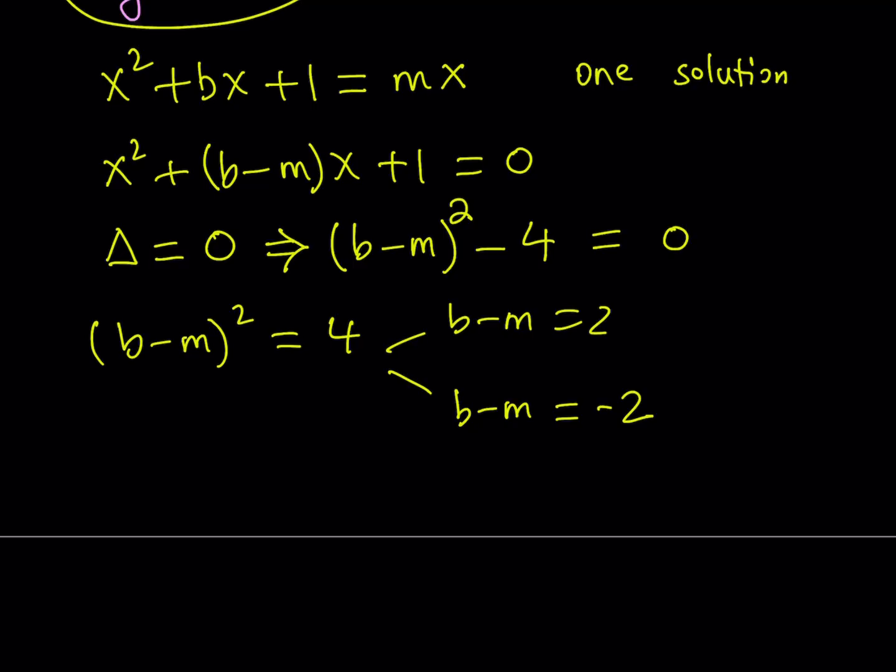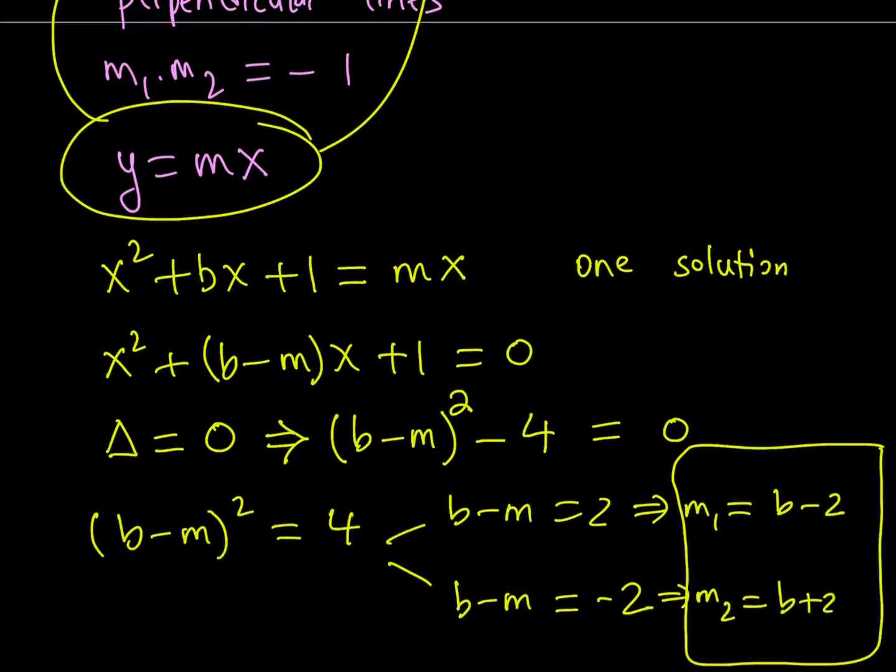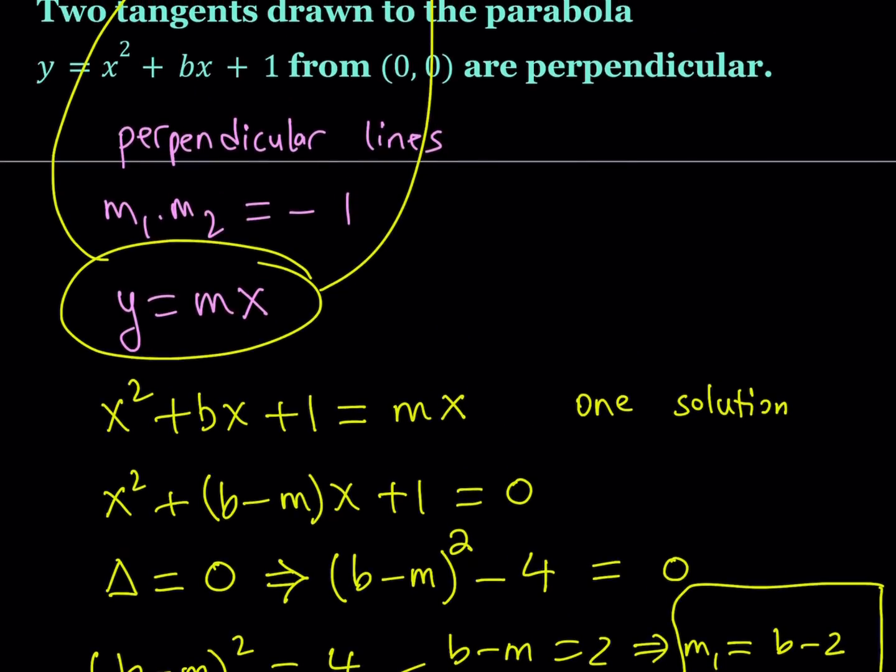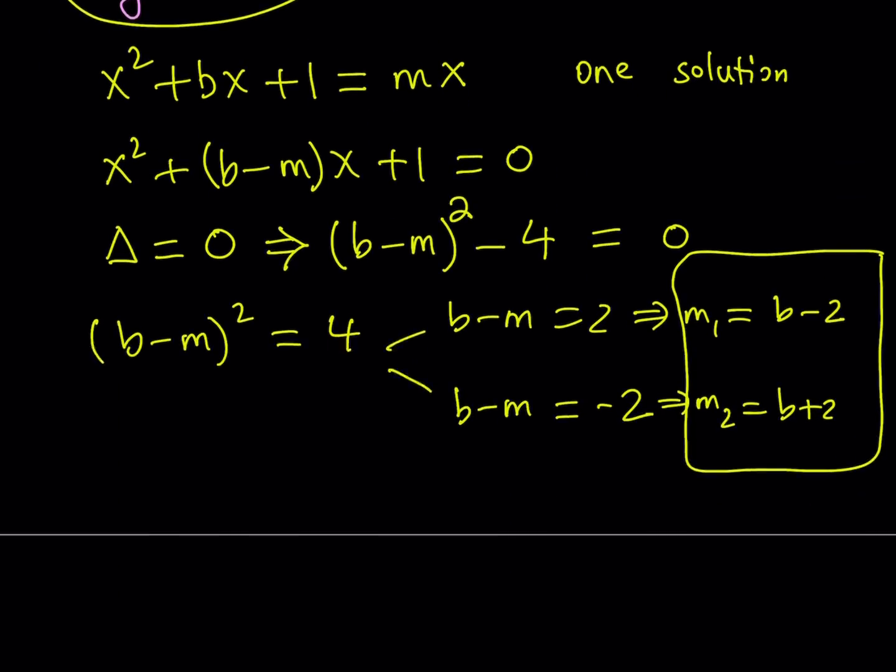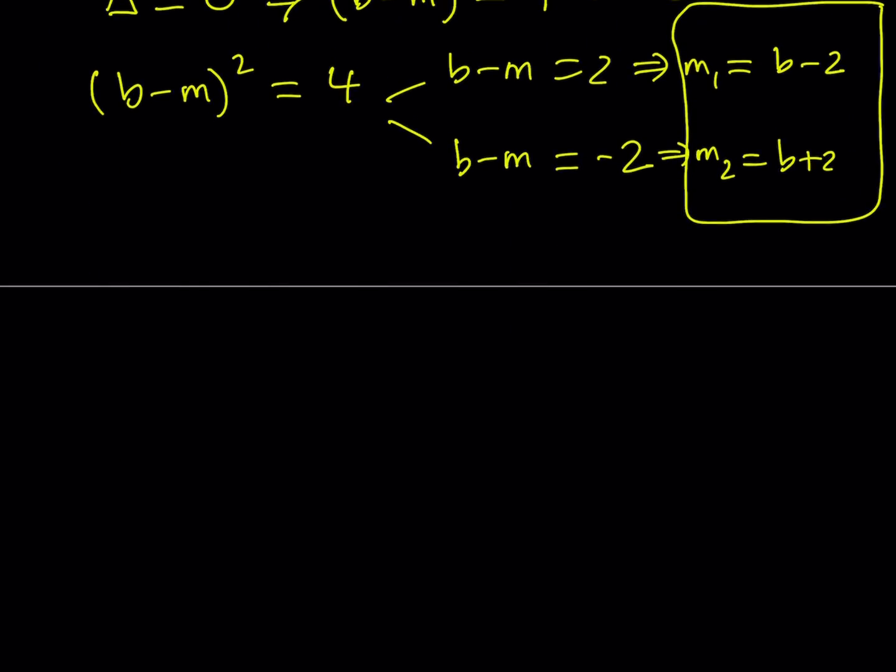So from here, it would make sense if I isolated m because that's going to give me the slope. So from here, the first slope, which I could call m1, is going to be b minus 2. And the second one, m2, is just going to be b plus 2. So these are the slopes of the lines, the tangent lines. And we know that since these lines are perpendicular, then the product of their slopes is equal to negative 1. So my next step is going to be multiply the slopes and set it equal to negative 1 and solve the resulting equation.